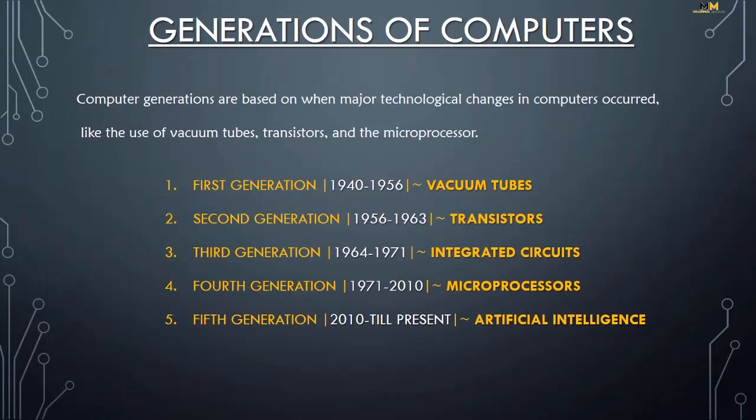Generations of Computers. Computer generations are based on when major technological changes in computers occur, like the use of vacuum tubes, transistors and the microprocessor. There are five generations of computers.